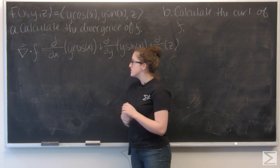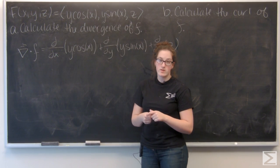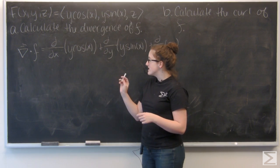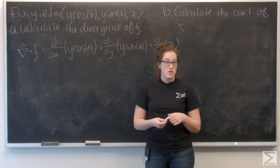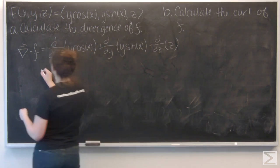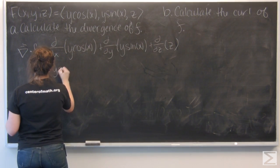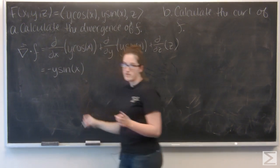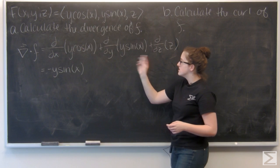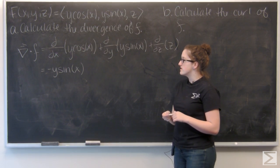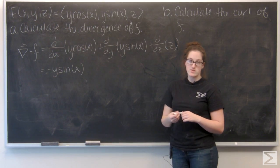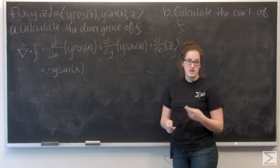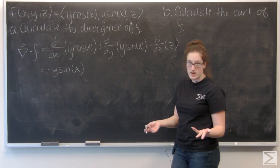Starting with the first term, I want to take the derivative of y cosine x with respect to x. y is like a constant, and the derivative of cosine is negative sine, so I end up with negative y sine of x. Now let's take the partial derivative of y sine x with respect to y. Sine of x is treated like a constant, so I'm just left with sine of x.